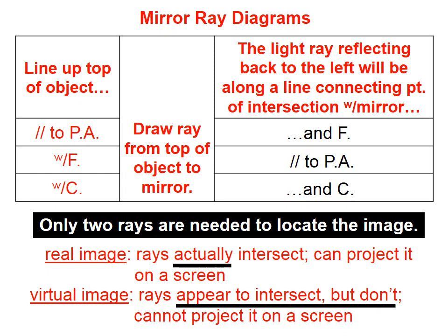Rule number one: start out with your ray traveling parallel to the principal axis, and when it reflects back from the mirror, it should reflect along a line through the focal point.